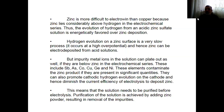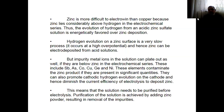This means the solution needs to be purified before electrolysis. Purification of the solution is achieved by adding zinc powder, resulting in removal of impurities. When we add zinc powder to a solution containing copper and cadmium, zinc displaces copper — copper precipitates from the solution and the concentration of zinc increases. Because our purpose is zinc refining electrolysis, it wouldn't bother us to increase zinc concentration. But the concentration of copper decreases, as well as the concentration of cadmium, and this point is important.